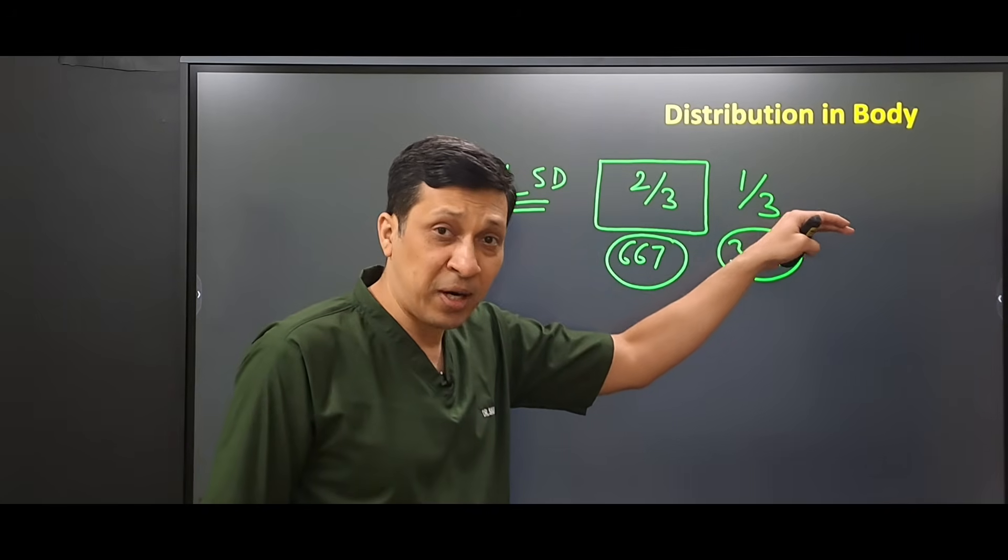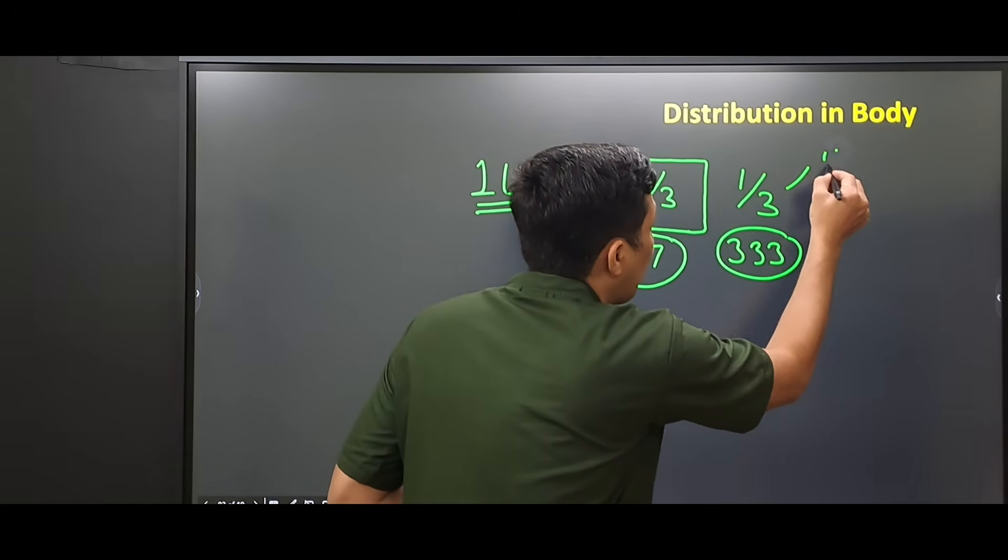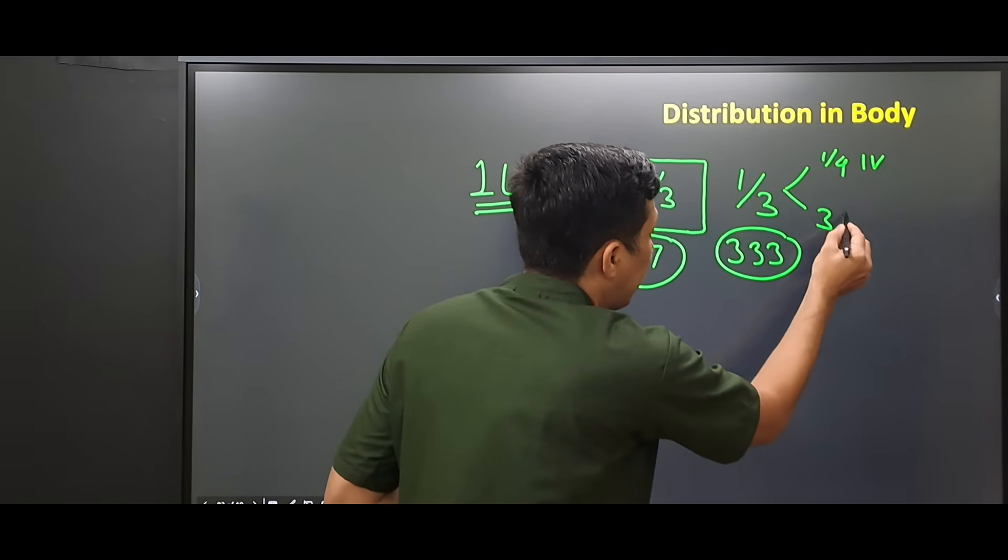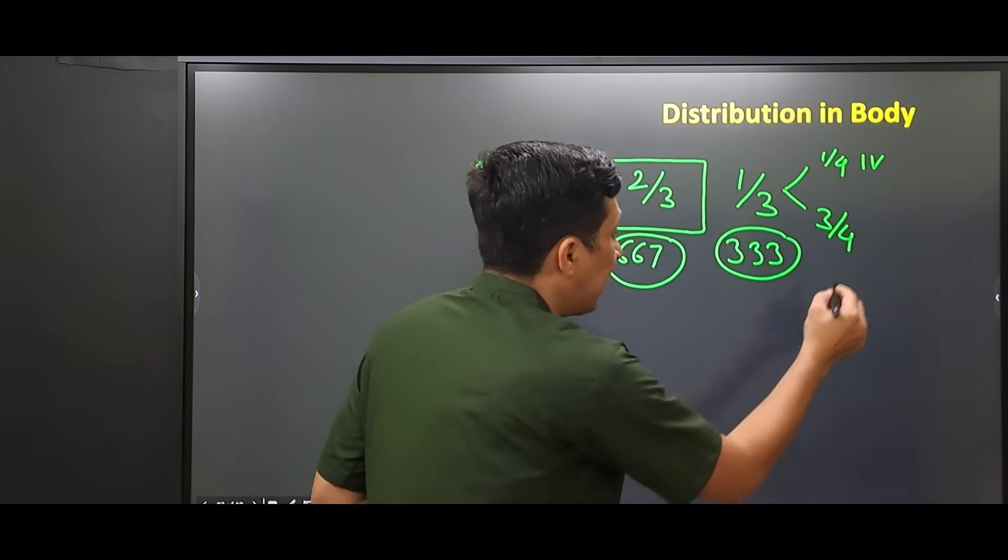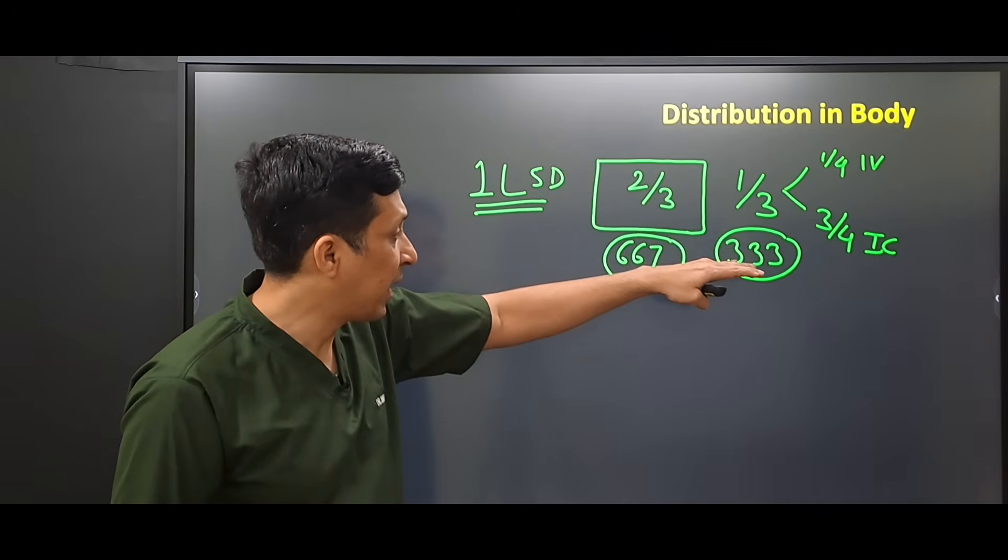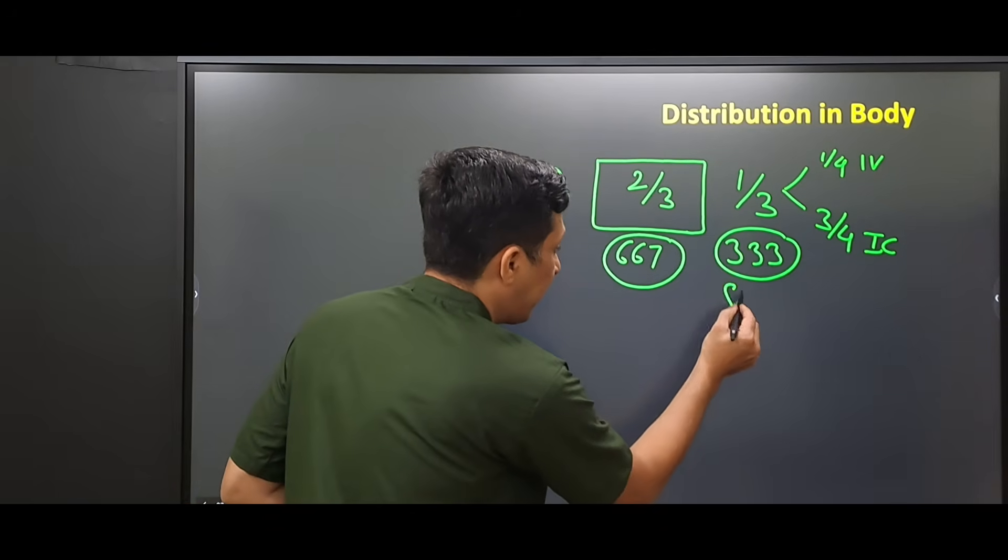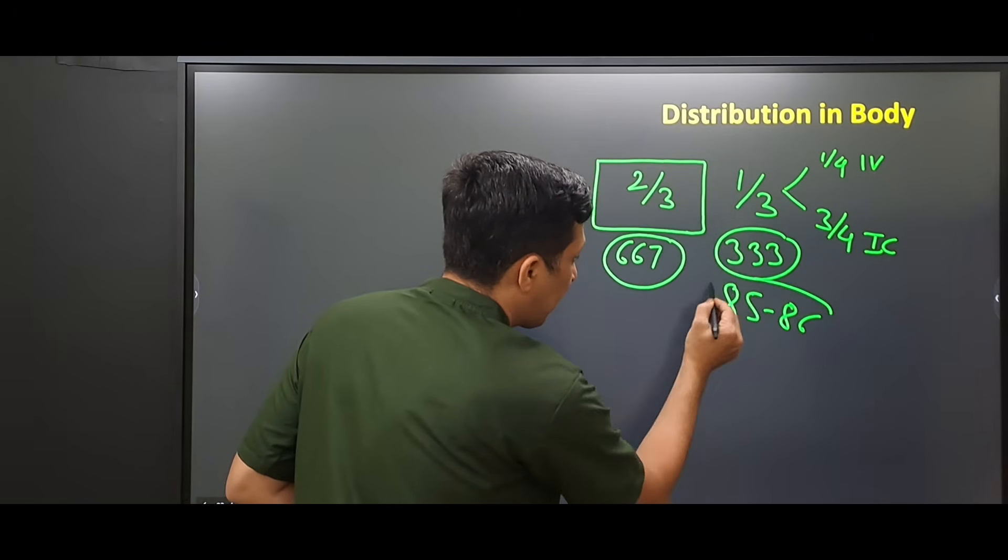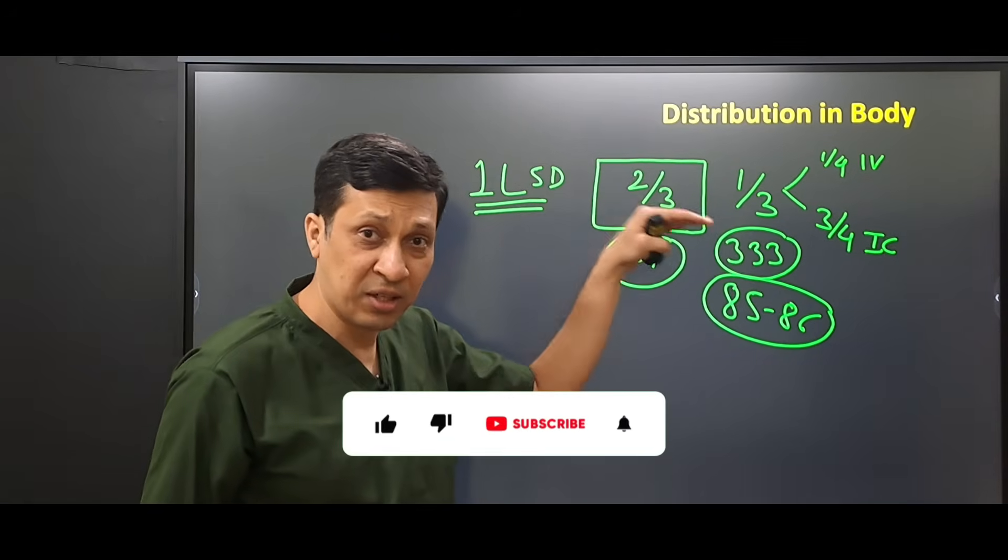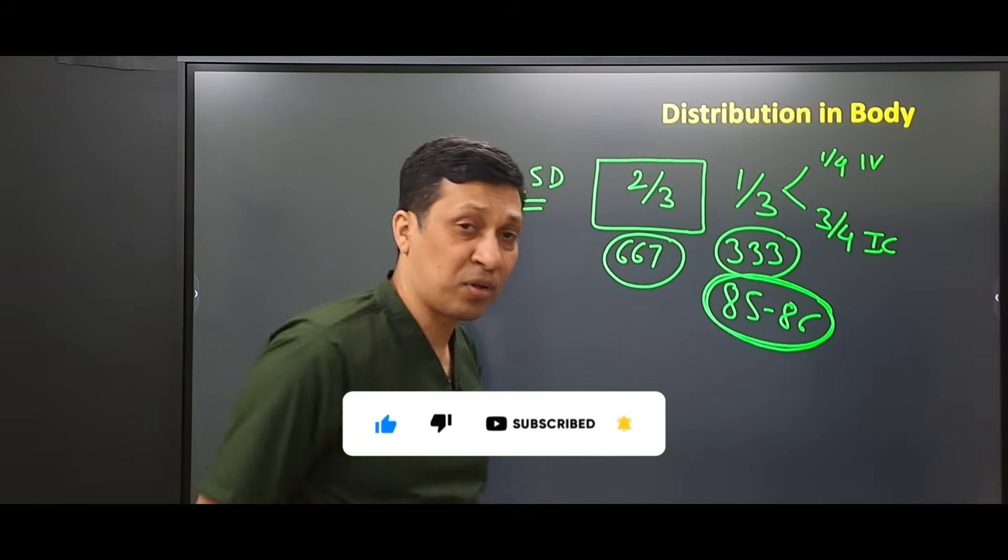Now this extracellular compartment: about one-fourth of fluid is present in the intravascular compartment and the remaining three-fourths is present in the intercellular spaces. So if we take one-fourth of this 333 ml, it comes to about 85 to 86 ml.